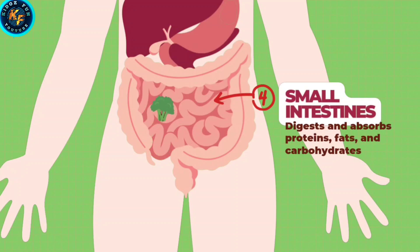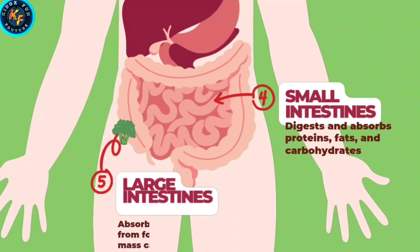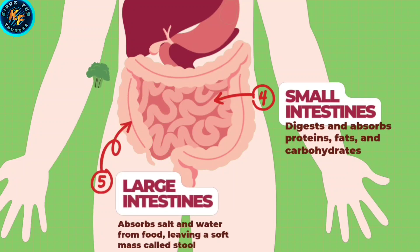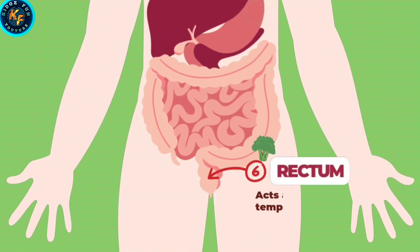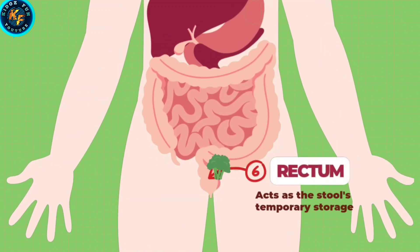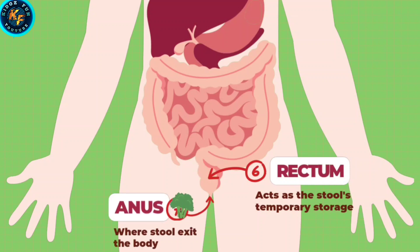The small intestine digests and absorbs proteins, fats, and carbohydrates. The large intestine absorbs salt and water from food, leaving a soft mass called stool. The rectum acts as the stool's temporary storage.